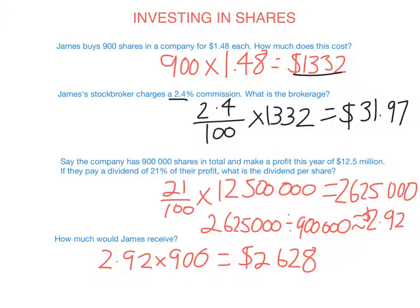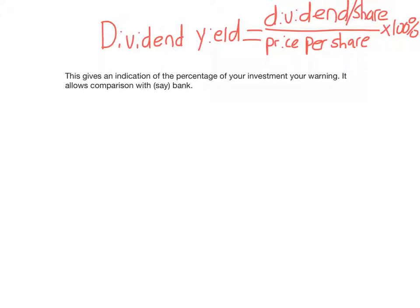Now we're going to look at the dividend yield. The formula is: dividend yield = (dividend per share ÷ price per share) × 100%. The reason people calculate dividend yield is it gives an indication of the percentage of what they invested that they've earned — did they earn 4% of what they originally invested this year, or 10%?